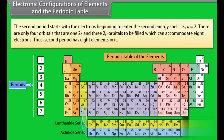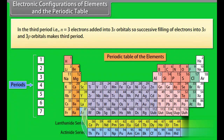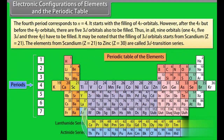The second period starts with electrons beginning to enter the second energy shell, n = 2. There are only 4 orbitals — 2s and 2p — to be filled, which can accommodate 8 electrons. Thus, the second period has 8 elements. In the third period, n = 3, electrons are added into 3s orbitals. Successive filling of electrons into 3s and 3p orbitals makes up the third period.